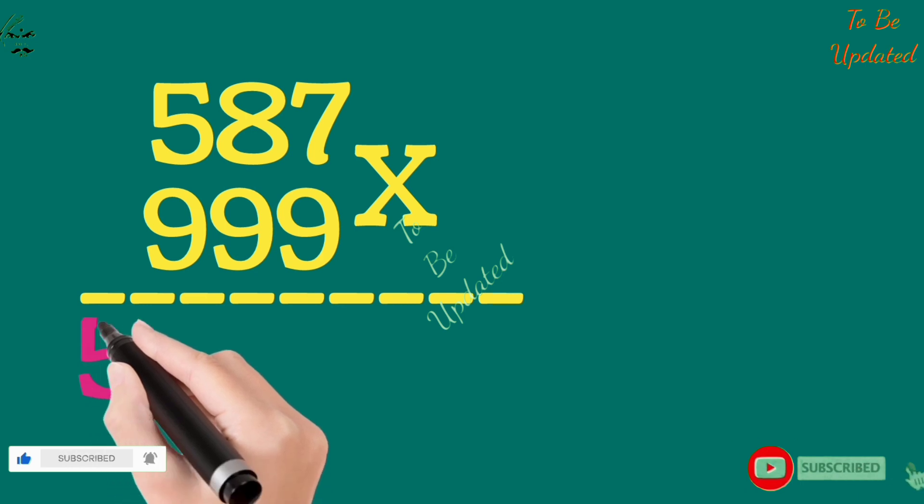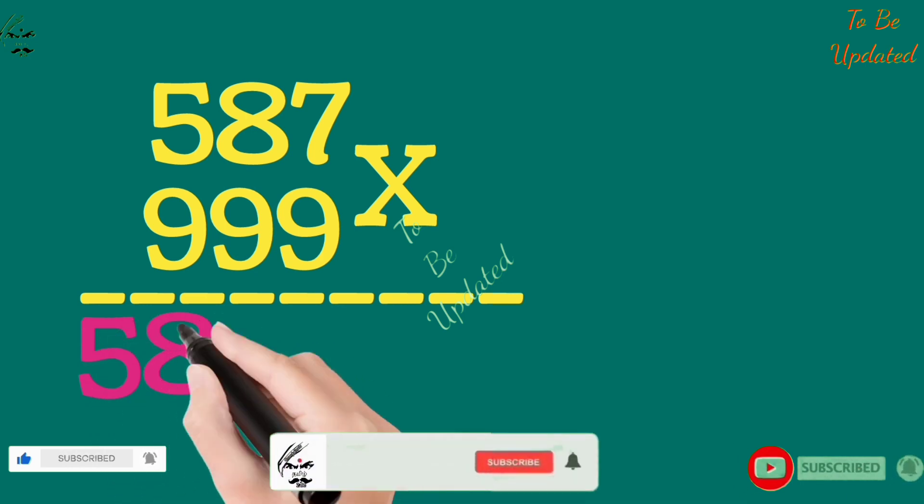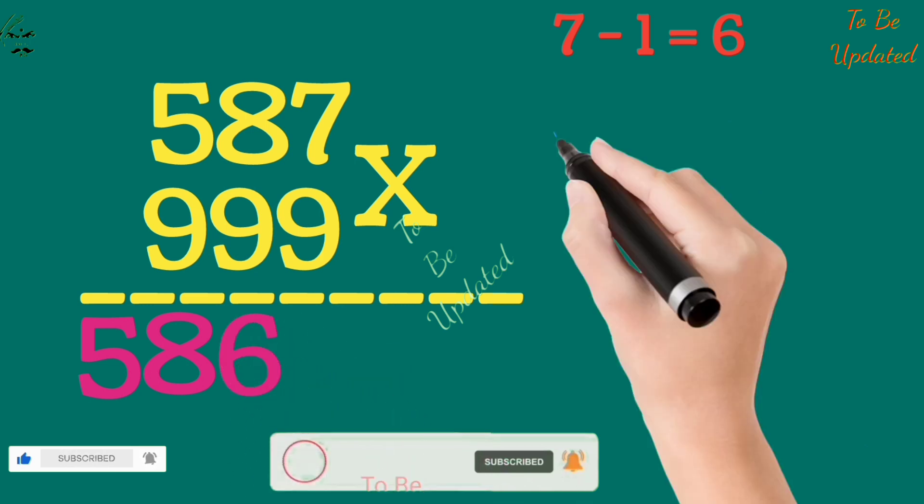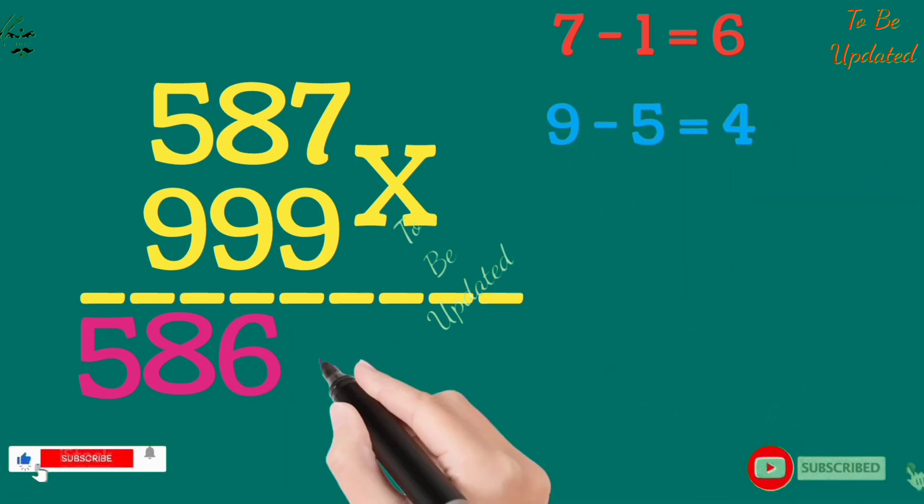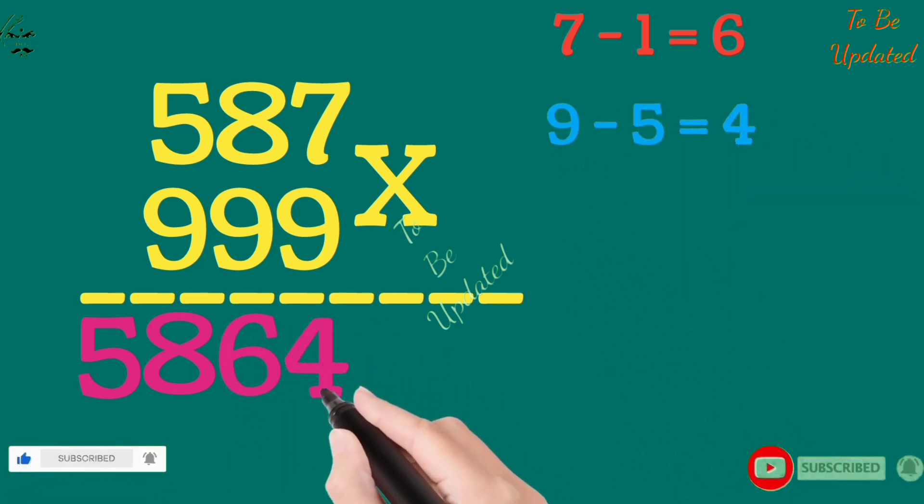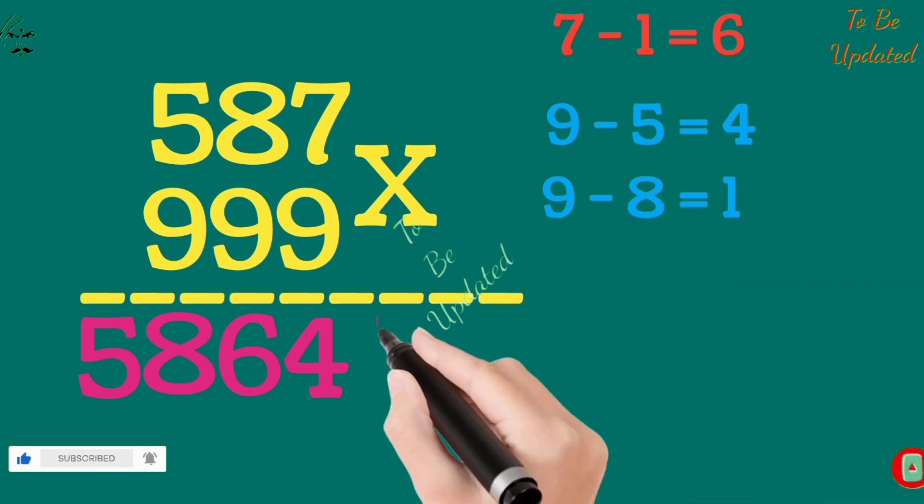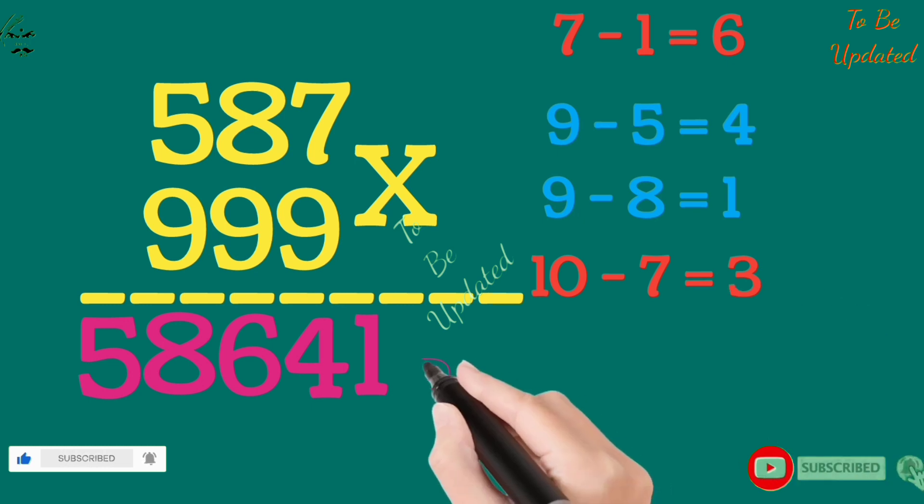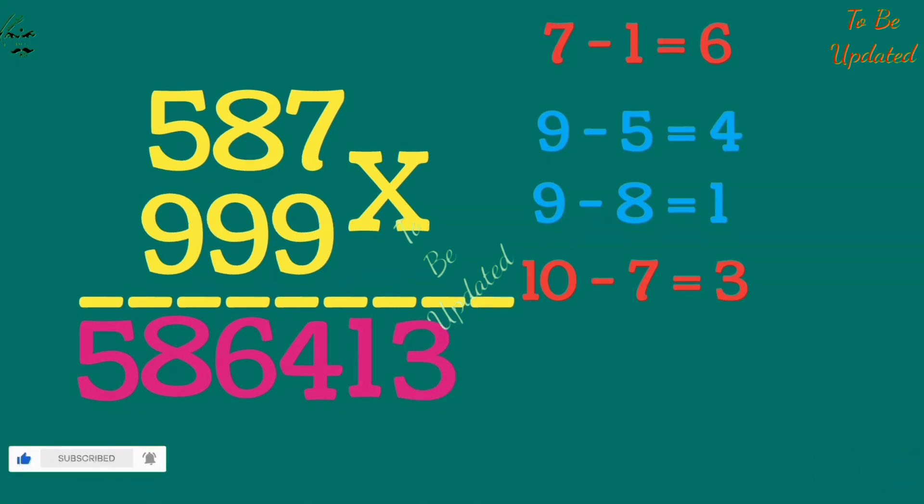Write first 2 digits as it is: 5-9. And subtract 1 from last number 7, we get 6. Then subtract 9 by 5, we get 4. And 9 by 9 we get 0. The last number must be subtracted from 10, then we get 3. So 587 multiplied with 999, we get 586403.